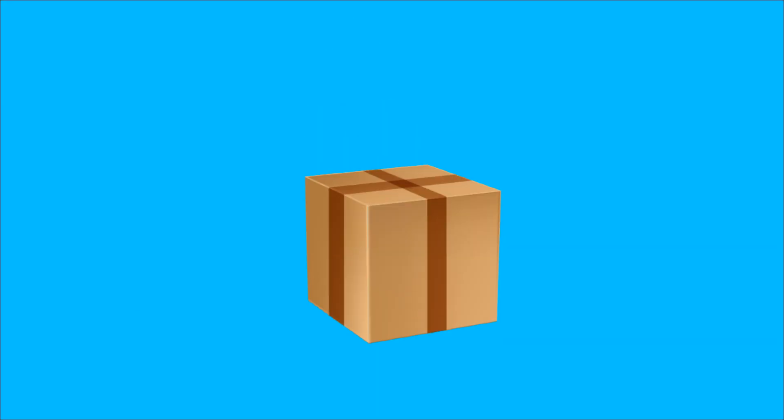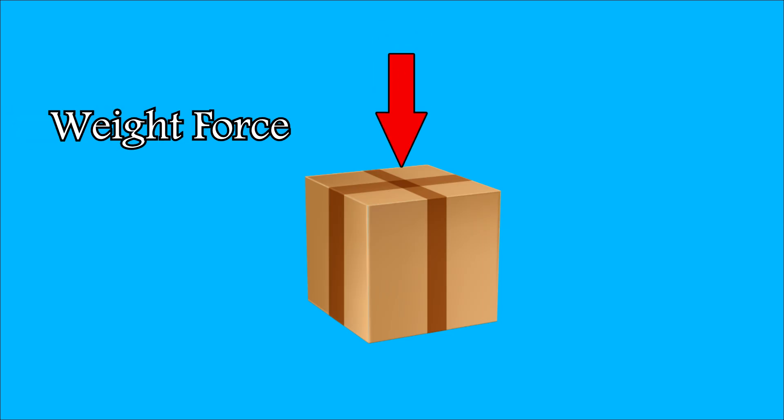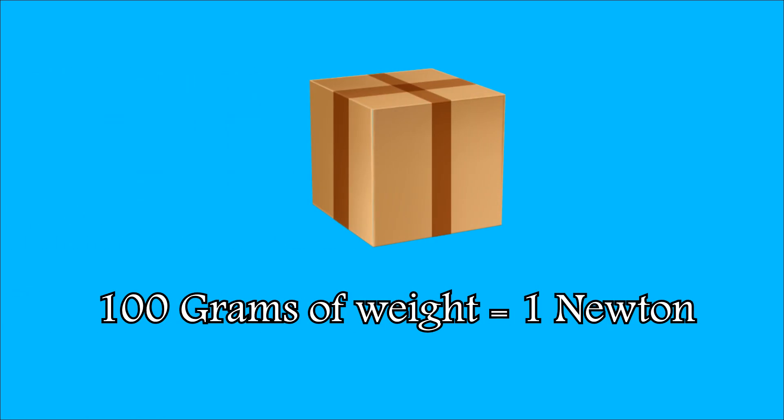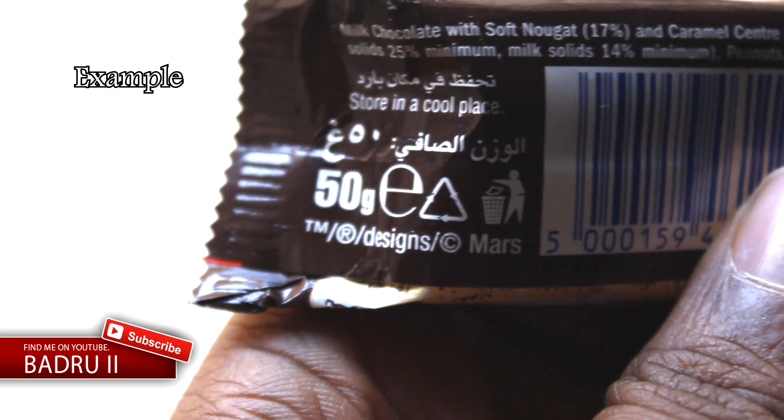Now go ahead and forget about that technical definition because it's not going to pay your bills. If you put a cup or a box on a table, it pushes down with a certain force expressed in Newtons. Basically, if an object weighs 100 grams, it pushes down on that surface with a force equal to one Newton. This right here is a Snickers bar and it weighs 50 grams, so if I place it on my palm, it is pushing down with 50 grams — that means half a Newton.